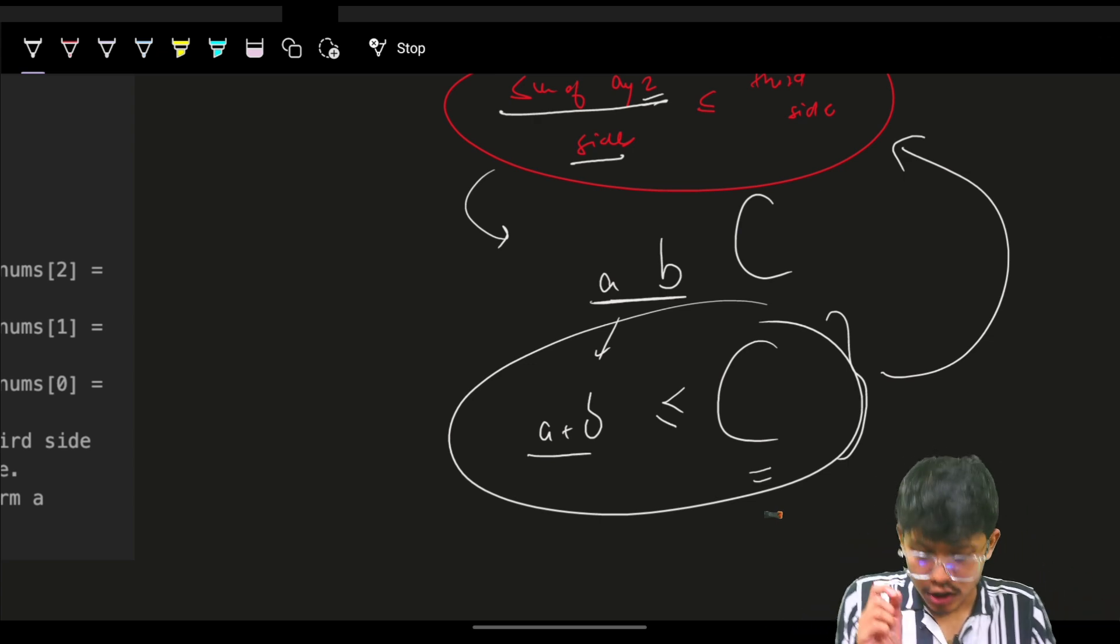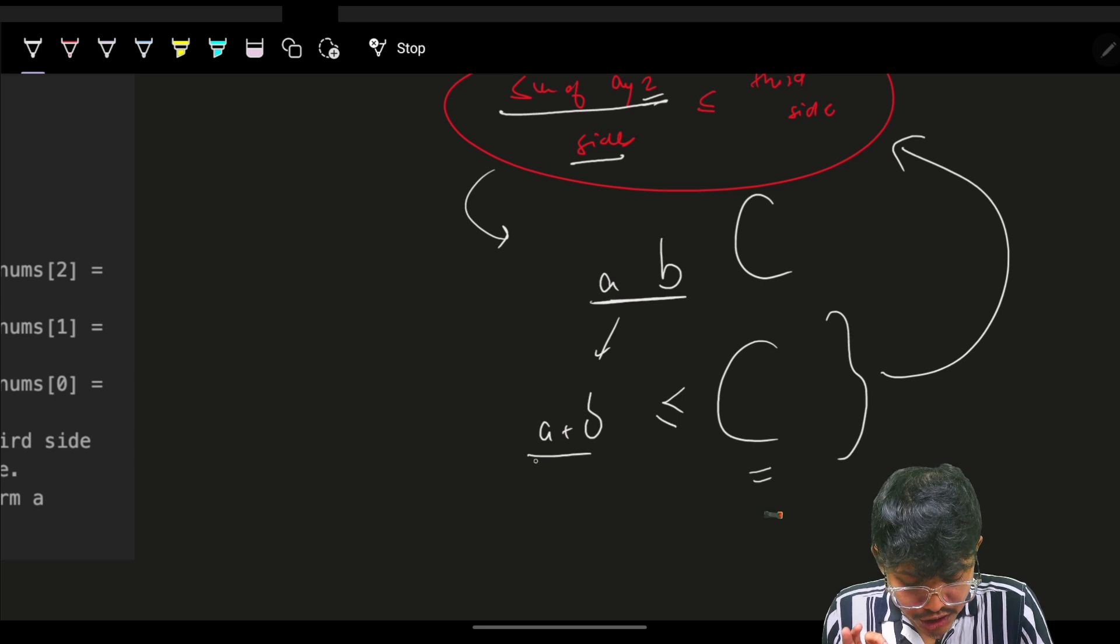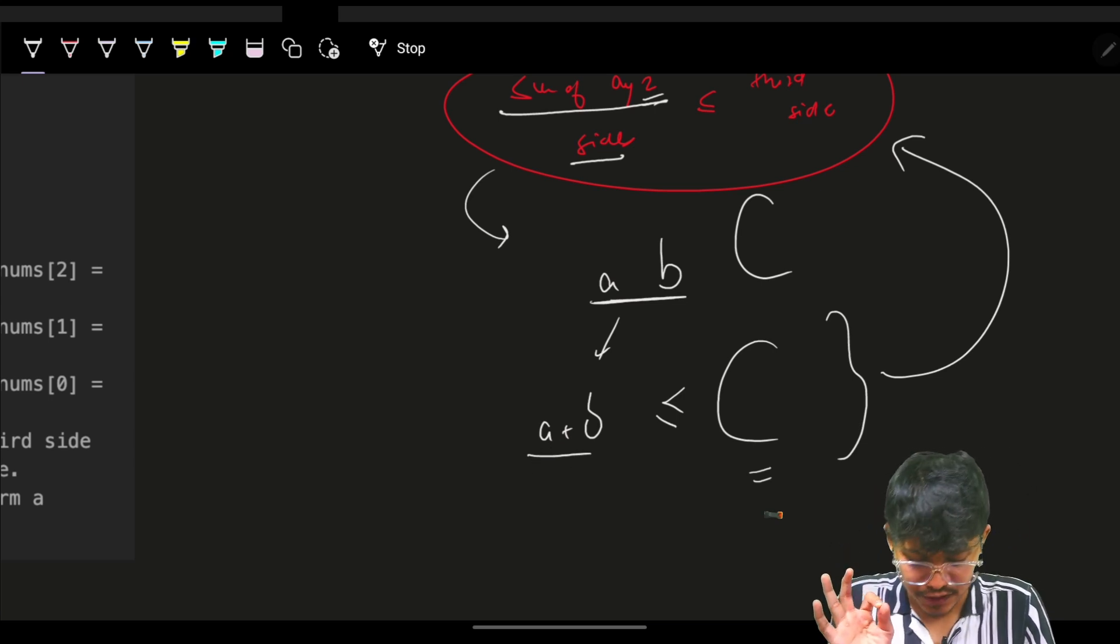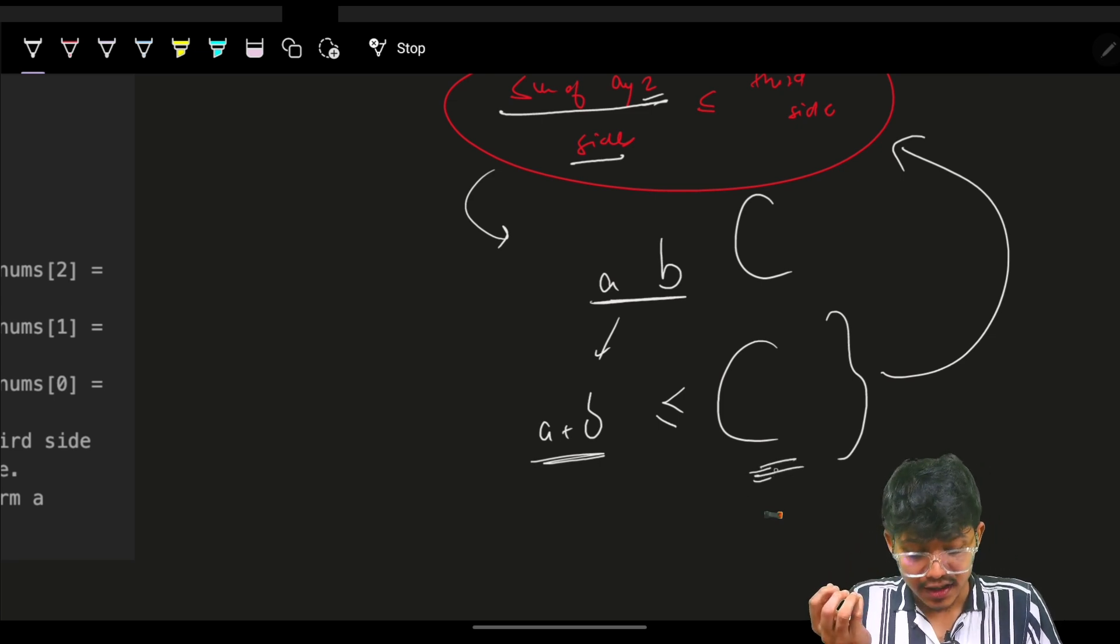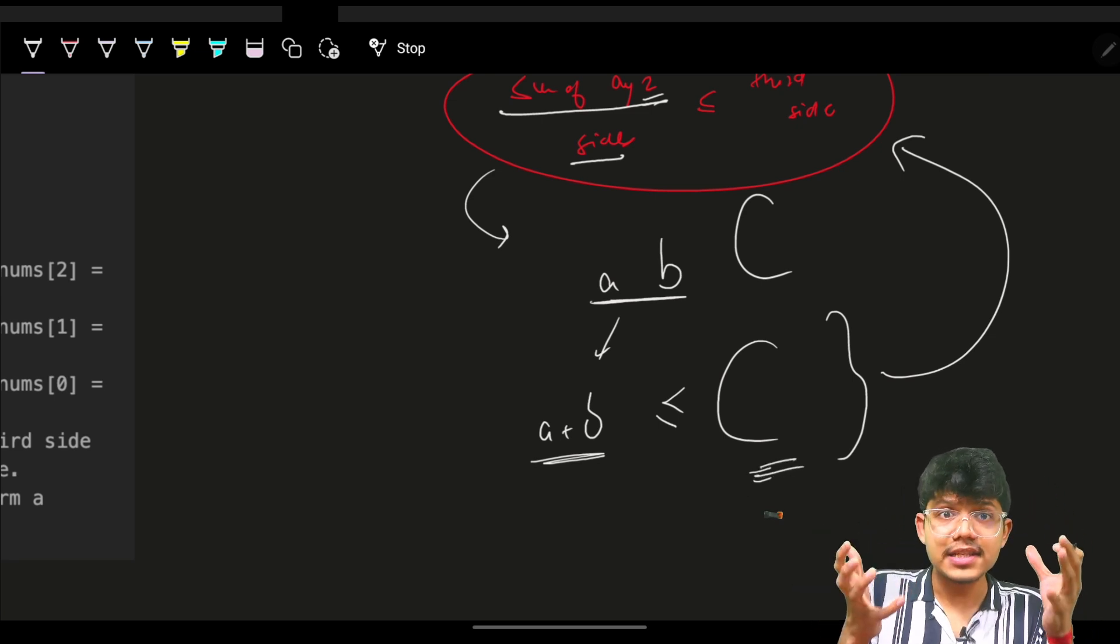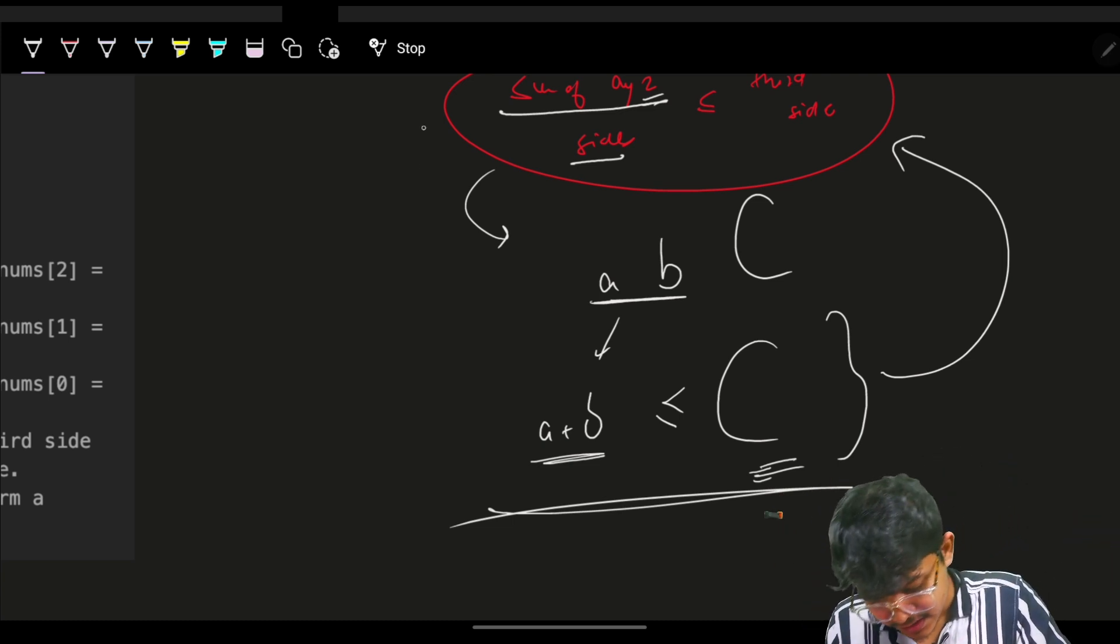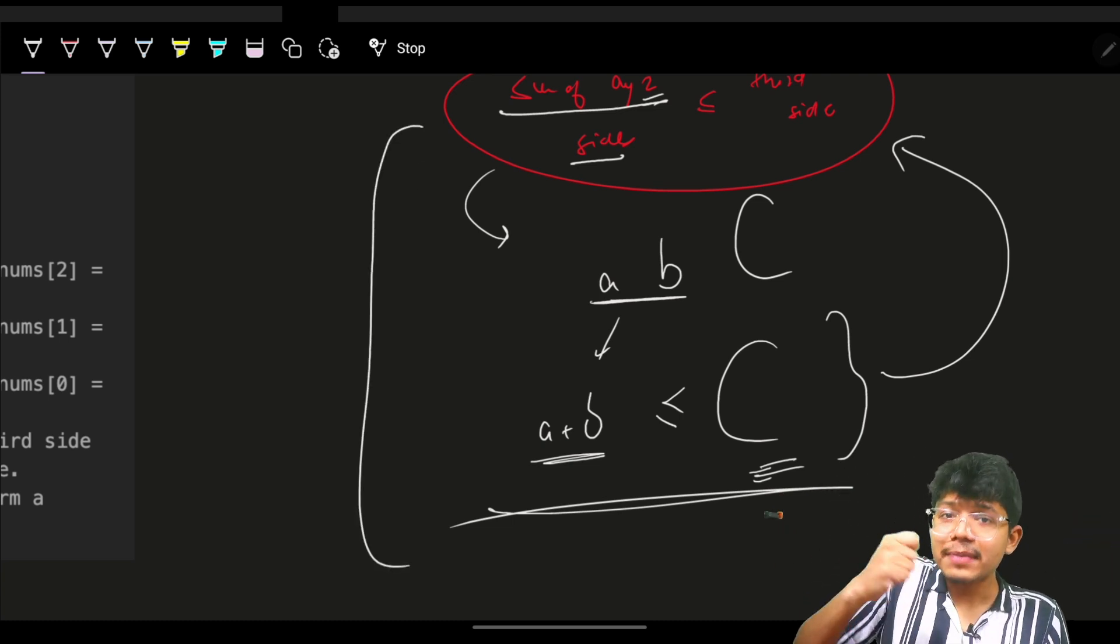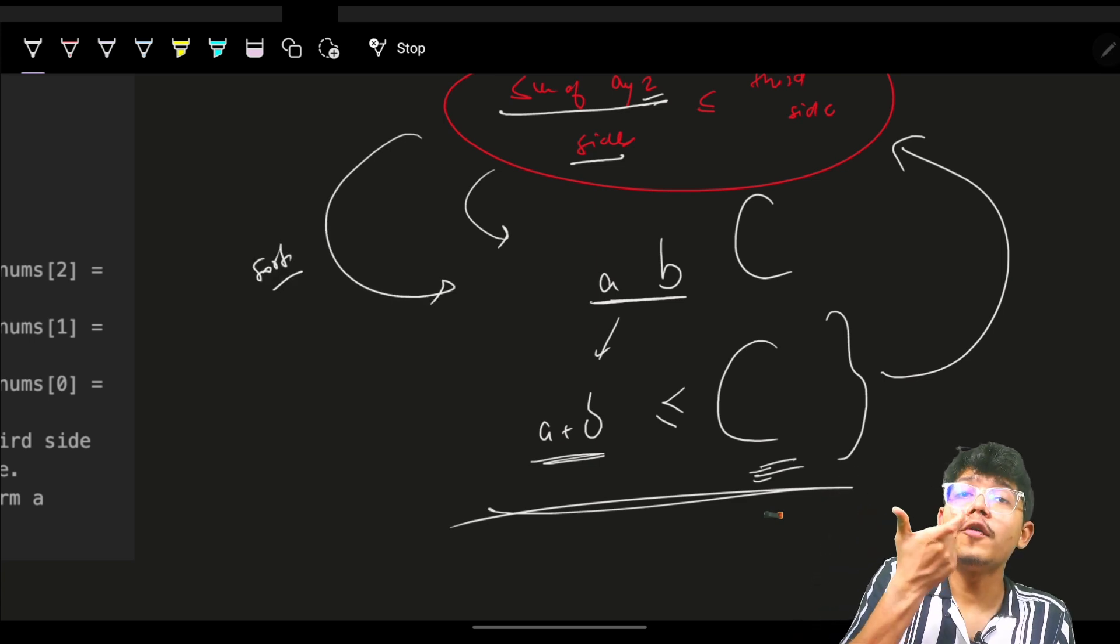But if it is not, then the triangle is for sure possible in any case. Because you just checked for the worst possible condition, which means minimum side sum, and you are checking if it is less than or equal to the maximum side. If this itself is not true, then any combination whatsoever will never be true. Thus, the cleanest implementation is, you have to sort your vector of size 3.